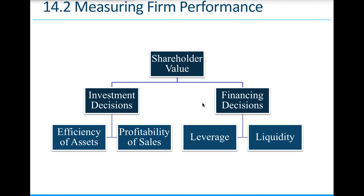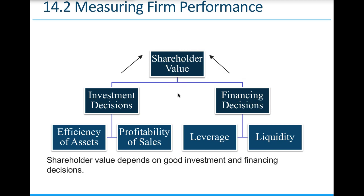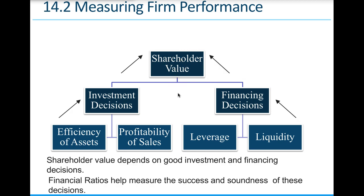Managing firm performance means enhancing shareholder value. Making the right investment decisions — buying the right assets and having the right mix of profitability — as well as financing decisions about leverage and liquidity all help enhance shareholder value. Financial ratios help us measure the success of these decisions. Regarding profitability of investments in real assets, we look at return on assets, return on equity, return on capital, and economic value added to see if assets are being used efficiently and effectively.